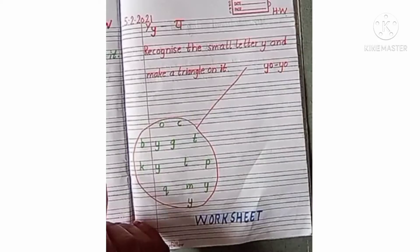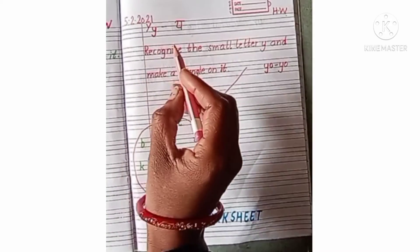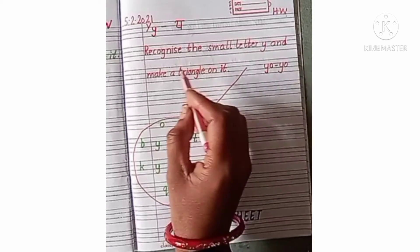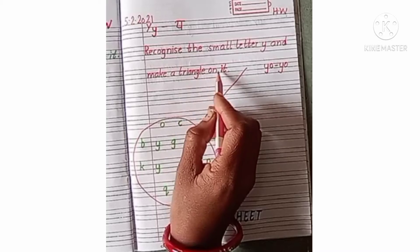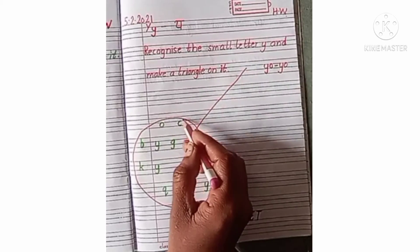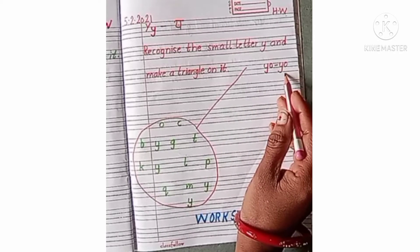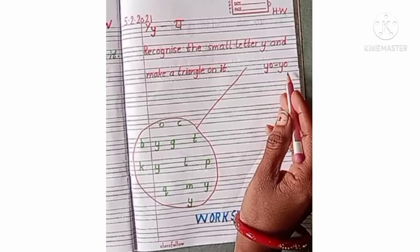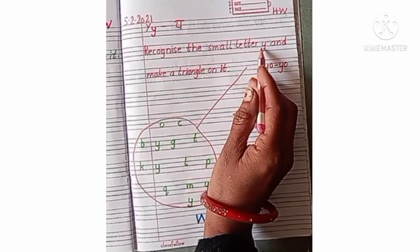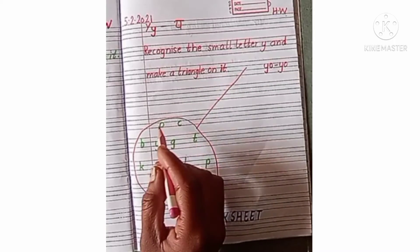Now we will do one worksheet regarding the small letter Y. Recognize the small letter Y and make a triangle on it. What is this? What is this super hip? Y a yoyo. Y a yoyo.